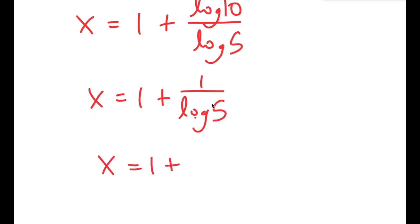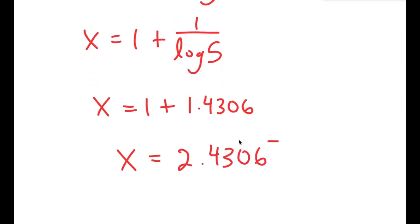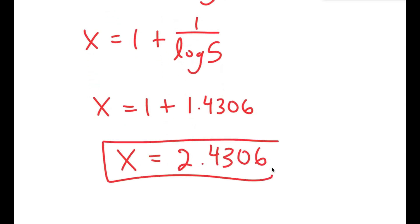And 1 over log 5 is equal to 1.4306. So I get x equals 1 plus 1.4306, which is 2.4306. So this is my answer.